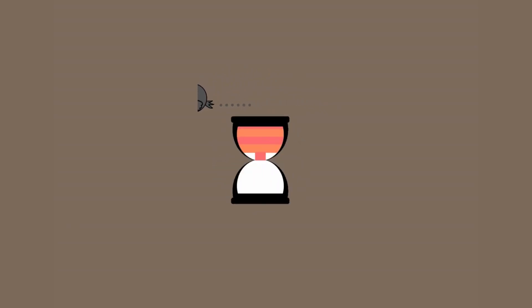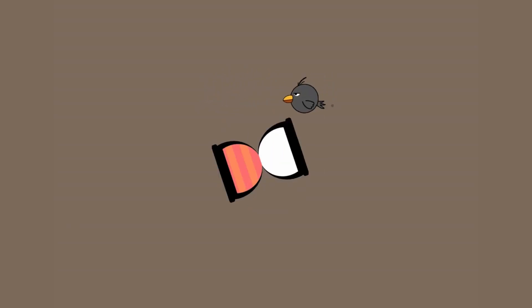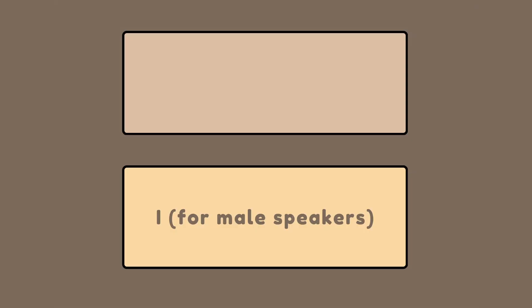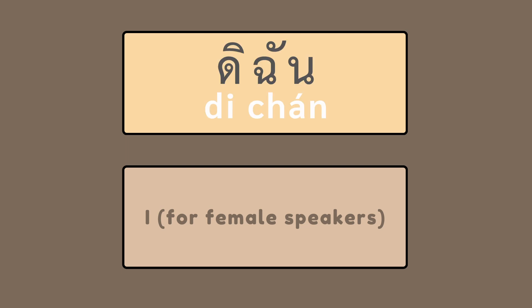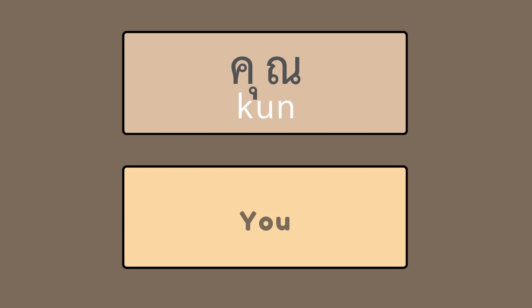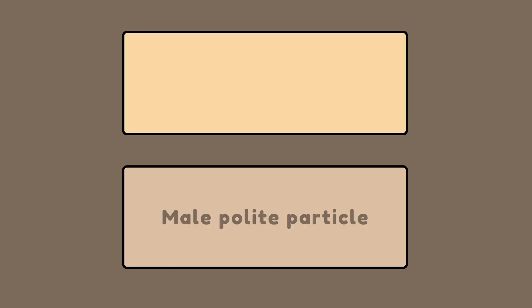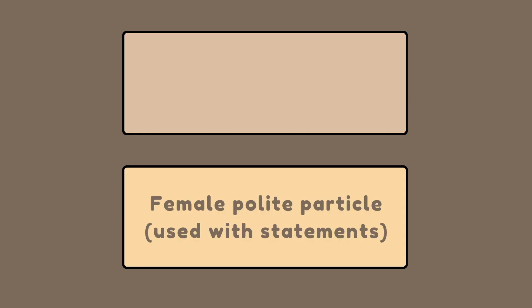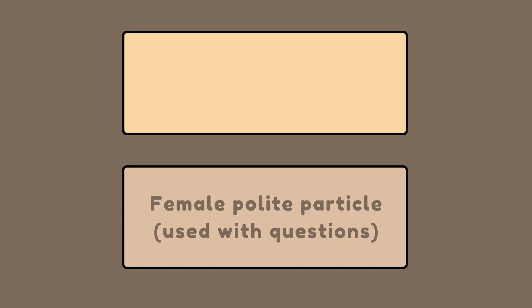This time, the English definition is given first, followed by the Thai word. I for male speakers — ผม. I for female speakers — ดิฉัน. You — คุณ. Male polite particle — ครับ. Female polite particle used with statements — ค่ะ. Female polite particle used with questions — ค่ะ.